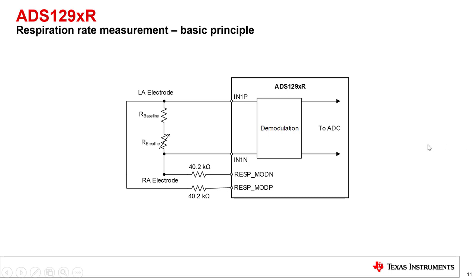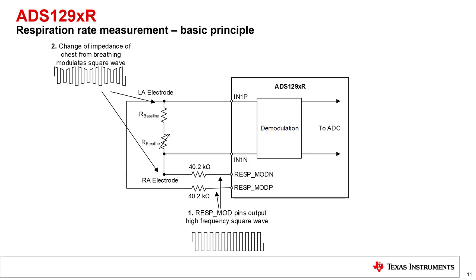First, the ADS129XR device outputs a high-frequency square wave excitation signal on the respiration mode pins. The change in impedance of the patient due to breathing will modulate the amplitude of the square wave. Second, the channel 1 input senses this amplitude modulation waveform. Finally, inside the ADS129XR, there is a demodulation circuit that will remove the high-frequency square wave. This will leave only the low-frequency waveform that corresponds to the patient's breathing.